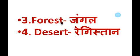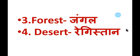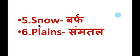Number three: forest — f-o-r-e-s-t — forest means jungle. Number four: desert — d-e-s-e-r-t — desert means registan. Number five: snow — s-n-o-w — snow means burf.